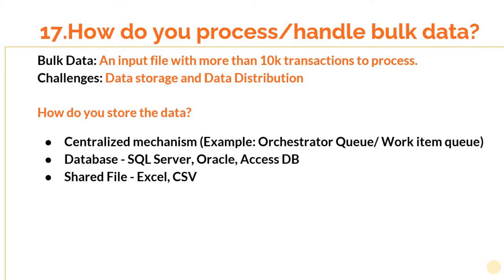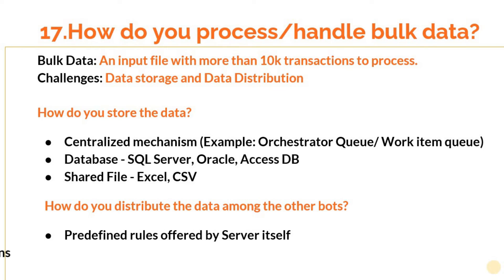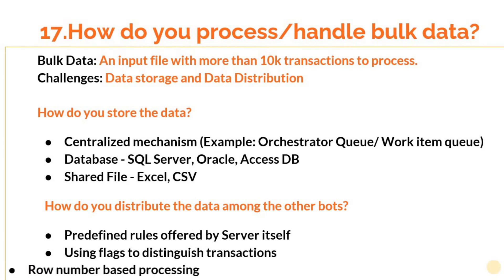After storage, we have to make sure that data distribution happens smoothly. We need to make sure no bot processes an already-processed transaction, which would cause a huge business impact. When you use queues, the RPA server provides facilities to distribute the data — for example, in UiPath you have a set of activities and logic to get the next available transaction item and to set the transaction status. If you are using a database, you can have a flag in your table: whenever any robot extracts a row, set the flag to 'in progress', and when processed, set it to 'complete', which avoids duplicate processing.